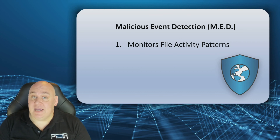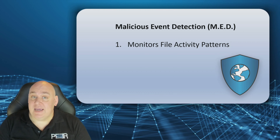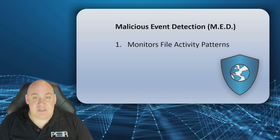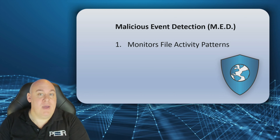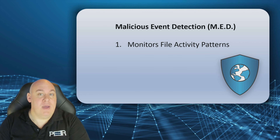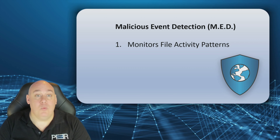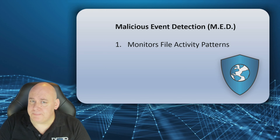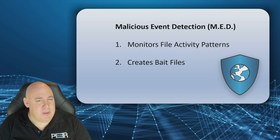Firstly, it will look for the type of file activity patterns that a ransomware program would typically cause. If detected, it can immediately and automatically halt any file synchronization between the participant locations to prevent it spreading around Dennis's organization. It can also send email alerts to Dennis and his administration team so that they can be made aware of a potential malware strike that they may need to look into.